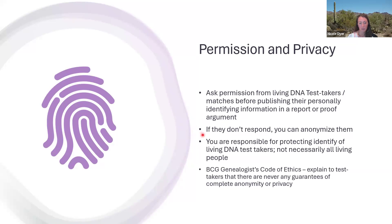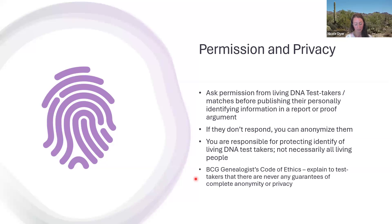When we send messages asking people for permission, often they go unanswered. If the person doesn't respond, it's adequate to go ahead and anonymize them in order to share the report. As genealogists, we are responsible for protecting the identity of living DNA test takers, but not necessarily all living people. It's important that we recognize and explain to people whose DNA we're using that there is never any guarantee of complete anonymity or privacy — even if we anonymize their name, other genealogists can probably figure out who they are just by tracing all the descendants of that grandparent.